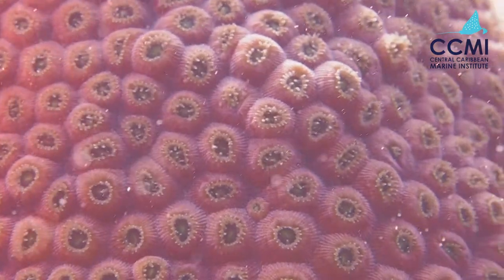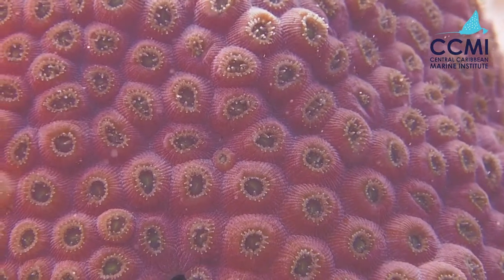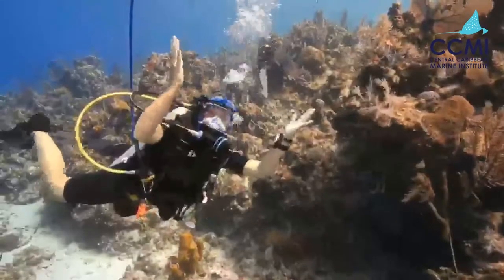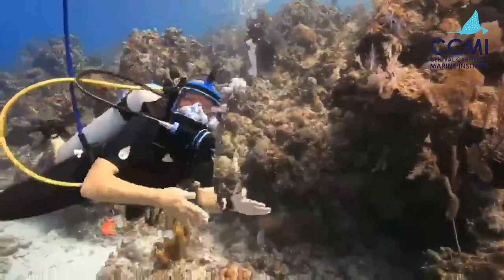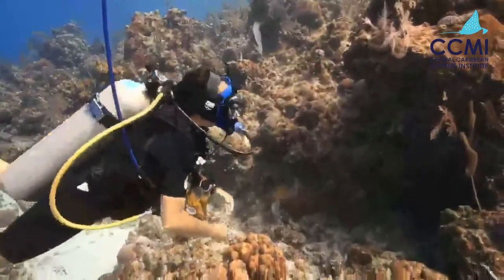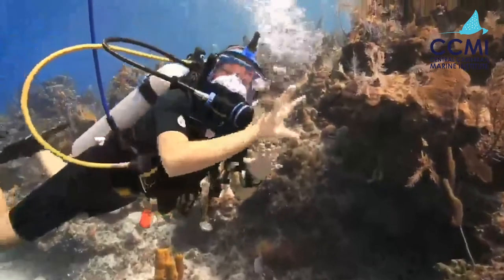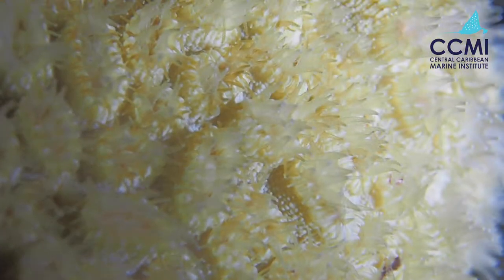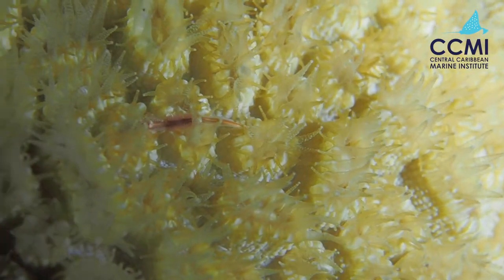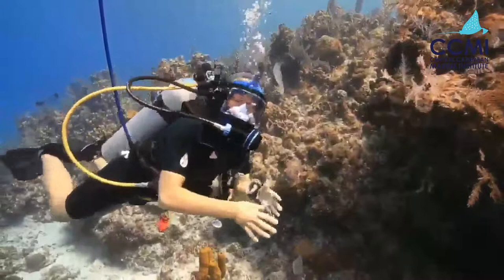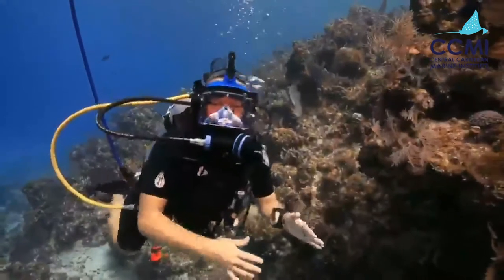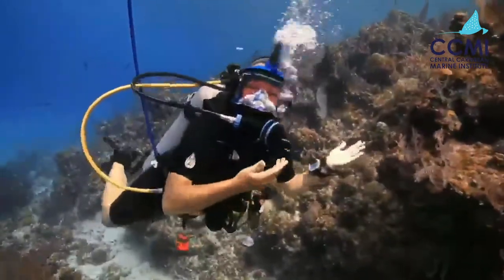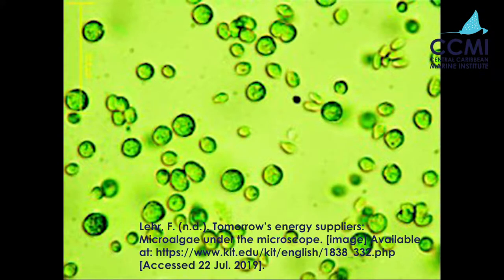Not only is the zooxanthellae giving the coral its beautiful color, but it's also taking in energy from sunlight and actually creating food for that coral — up to about 95% of its food, actually. The other 5% comes from the coral reaching out and grabbing for food. The coral is also giving the zooxanthellae a place to live; without this coral to call home, the zooxanthellae wouldn't survive. And without the zooxanthellae to give the coral the food it needs, the coral wouldn't survive. So both of them rely on each other.